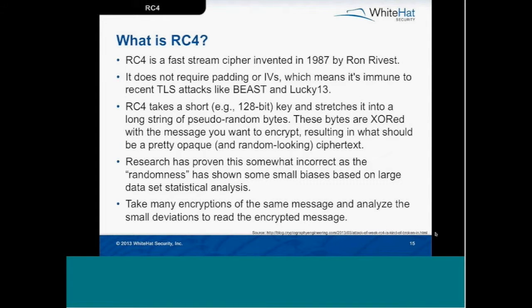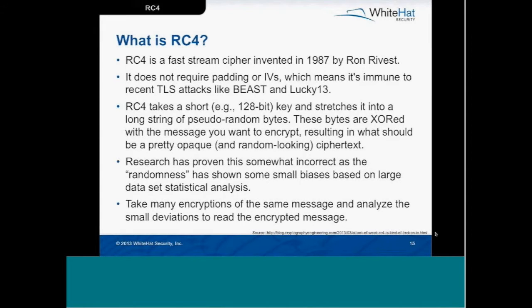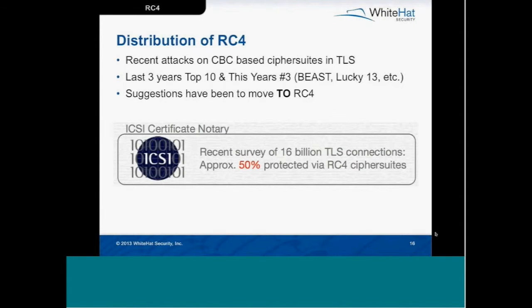This slide has dense content — the important points are that the beginning bits of the RC4 stream, specifically the first 256 bits which this attack focuses on, are supposed to be padded with random bytes and XOR'd to actually encrypt the data. But that randomness is what we're focusing on — it turned out to have some biases, and with a large enough dataset we're actually able to read the plain text.